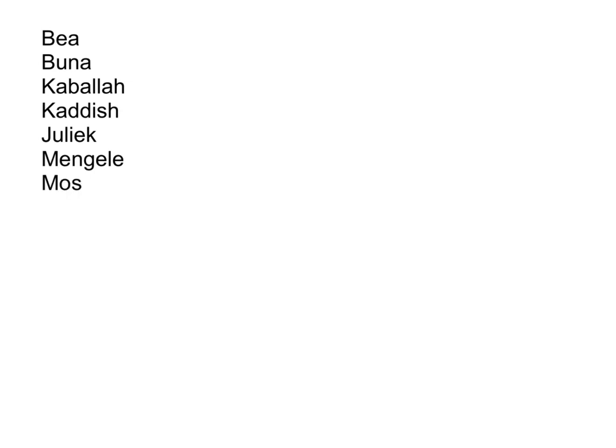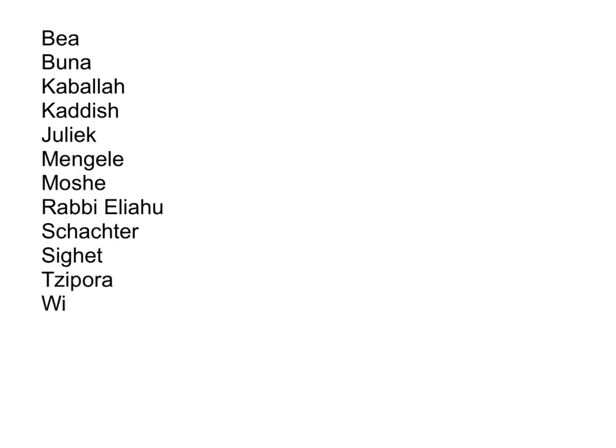The characters and terms you should know are: Baya, Buna, Kabbalah, Juliak, the Kaddish, Mengele, Moshi, Rabbi Eliahu, Mrs. Schachter, the town of Sighet, Tispora, Elie Wiesel, and the Zohar. There's your full list of characters.